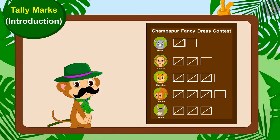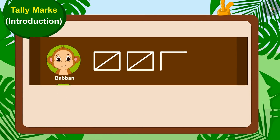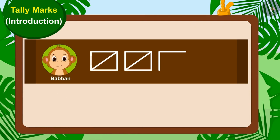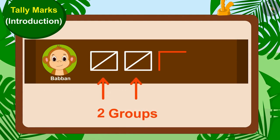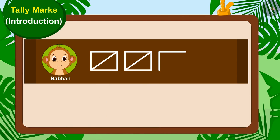Children, can you tell us how many votes Babban has got? Yes, absolutely right. There are two groups of tally marks and two lines in front of Babban's name. This means Babban has got 12 votes.